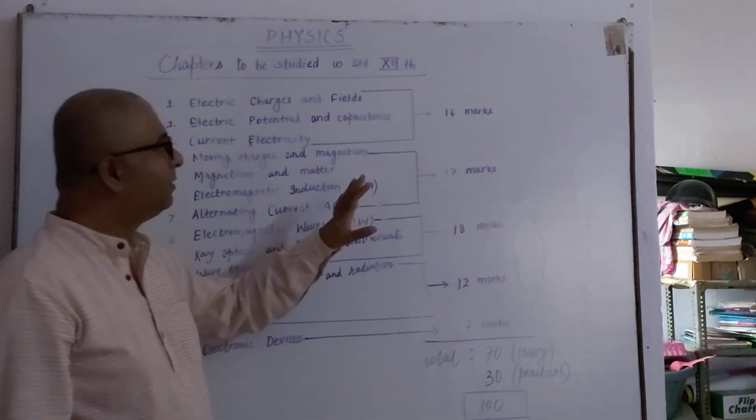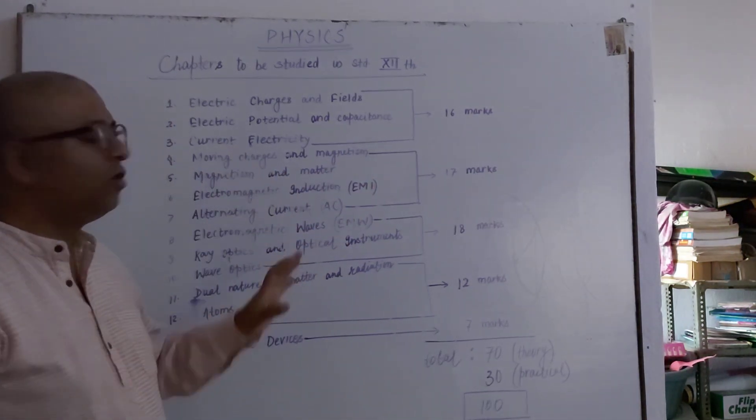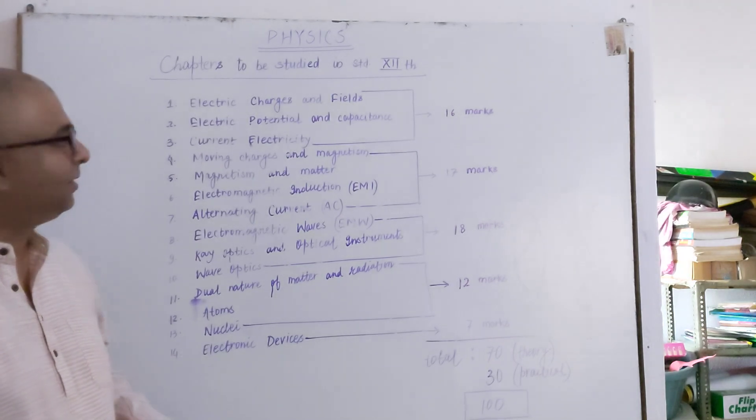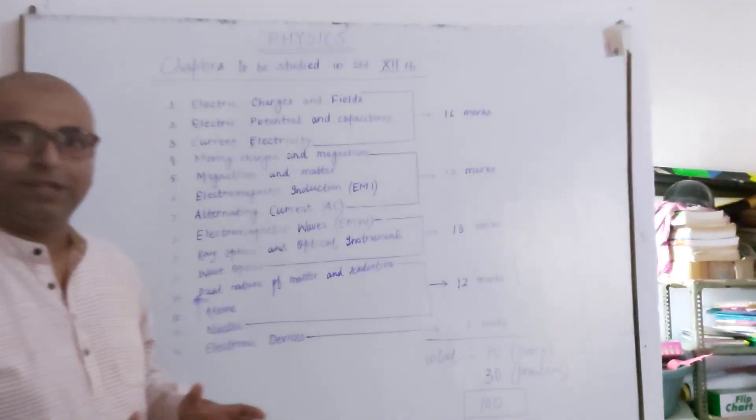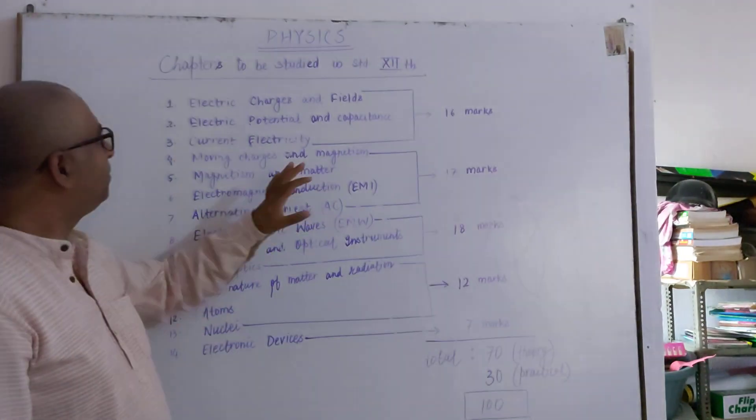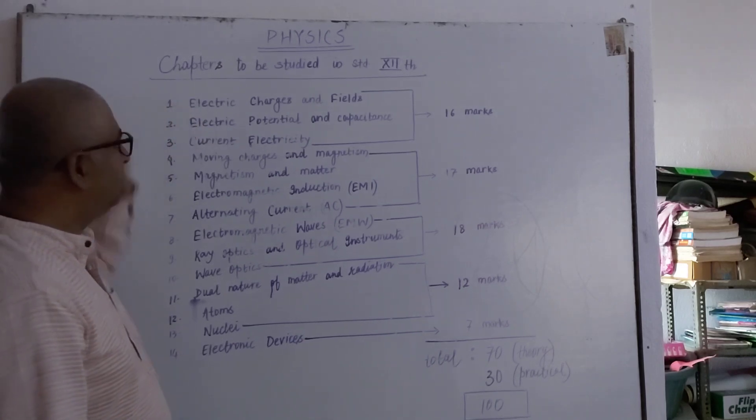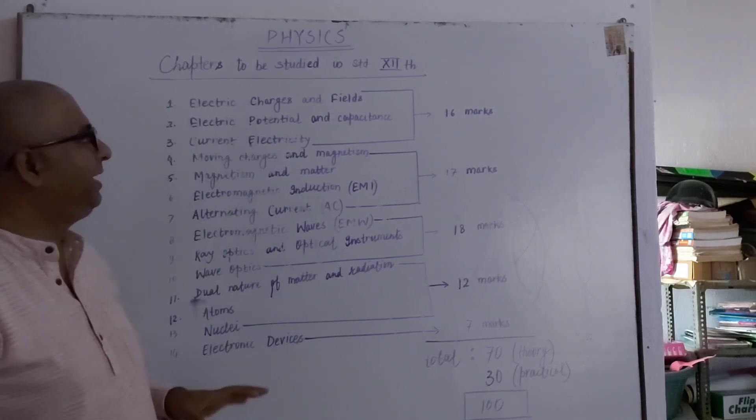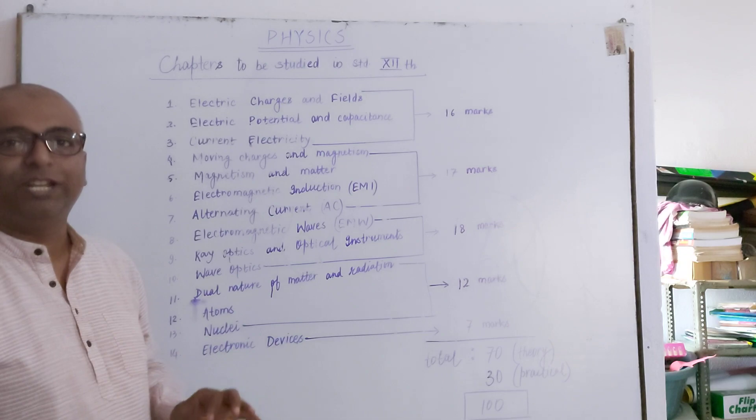Chapter-wise weightage is not given by CBSE. Rather, unit-wise weightage is given. So, from the first three chapters, the weightage of first three chapters is 16 marks.